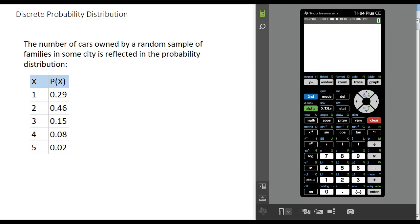In this video, we're going to look at how to find the mean and standard deviation of a discrete probability distribution.